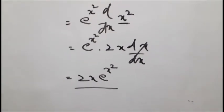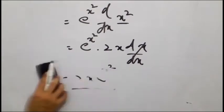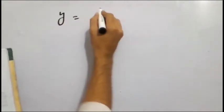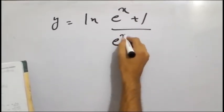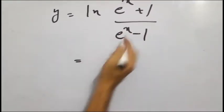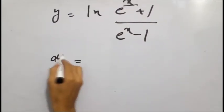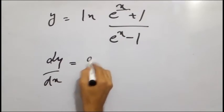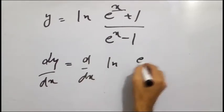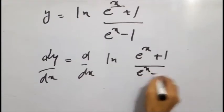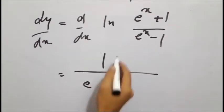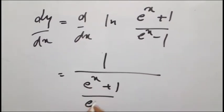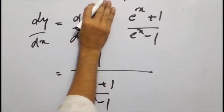Next सवाल में exponential और log दोनों दिए हैं, और quotient rule का भी इस्तेमाल होगा। y is equal to natural log of (e raised to power x plus 1) over (e raised to power x minus 1)। differentiation with respect to x करेंगे — dy over dx, d over dx into natural log of (e^x + 1)/(e^x - 1)। log का derivative होता है one over x, तो x की जगह यह पूरी value आएगी: (e^x + 1)/(e^x - 1)। अब log को छोड़ देंगे।